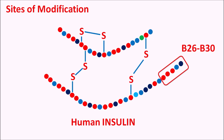Another site of modification is on the A chain — the A21 amino acid can also be modified. A third site is B3 on the B chain. The main site of modification is at the C-terminal of the B chain from B26 to B30, so most insulin preparations are obtained by modification of amino acids at this site.